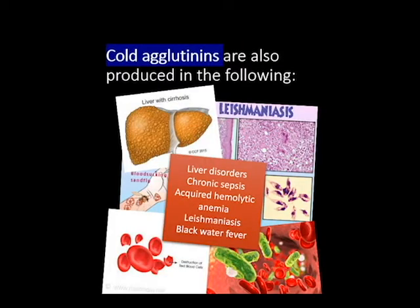Other diseases including liver disorders, chronic sepsis, acquired hemolytic anemia, leishmaniasis, and blackwater fever may also produce cold agglutinins.